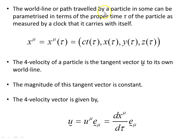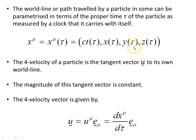The world line, or path traveled by a particle in spacetime, can be parameterized in terms of the proper time tau of the particle, as measured by a clock it carries with itself. The proper time is the time the particle would measure by carrying a clock on its person. So X^mu can be written as X^mu(tau) = (CT(tau), X(tau), Y(tau), Z(tau)), and the particle's path is parameterized in terms of proper time.